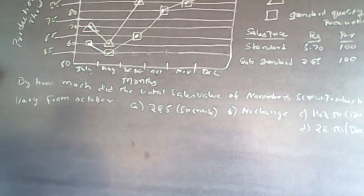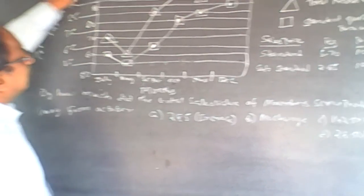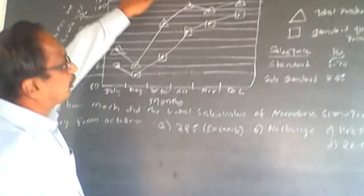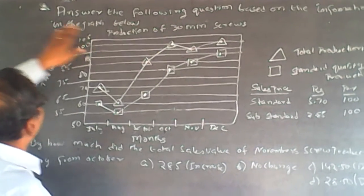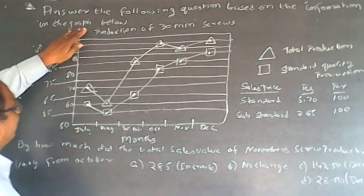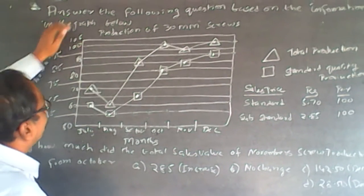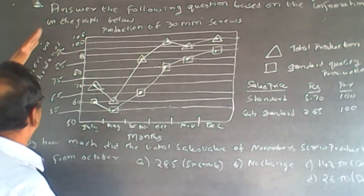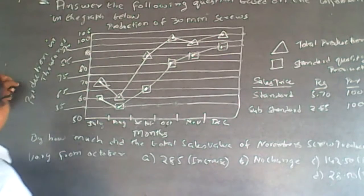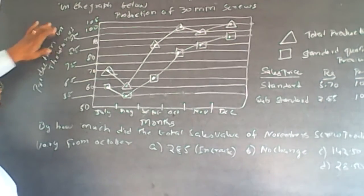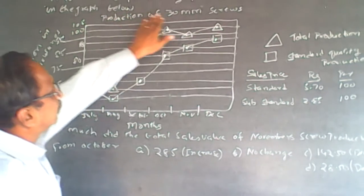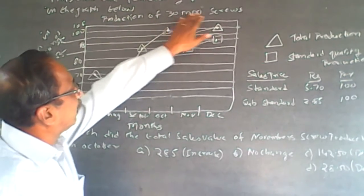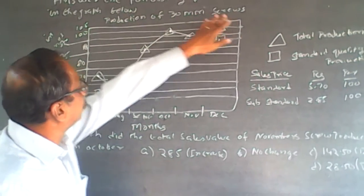The question is: answer the following question based on the information given in the graph below. On this side it is written as production in thousands, and here it is written as production of 30 millimetre screws.